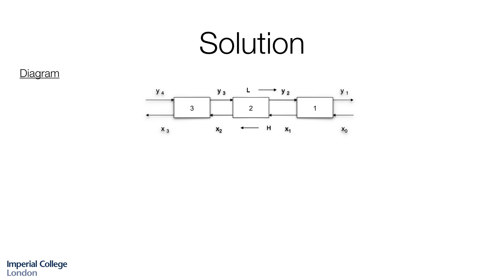So our solution looks like this. We always start by drawing a diagram. This shows our three equilibrium stages. We have the light phase, which is the organic phase, going from left to right and the heavy phase, which is the aqueous phase, starting here at our feed going from right to left. We recall that for any particular measure of concentration — for example x2 here, which is the concentration in grams per litre in this stream — the subscript is derived from the numbering of the stage that this stream is leaving. So this stream is leaving stage 2, so it has subscript 2.